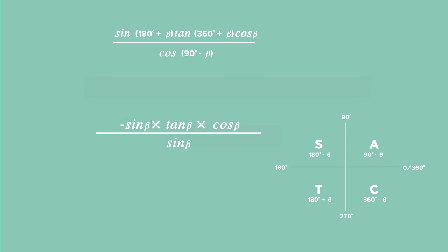So therefore to reduce sine of 180 plus beta our answer is going to be negative sine beta times by tan of 360 plus beta. Now for 360 plus beta remember that you can go around and around your Cartesian plane in what we call a revolution. So therefore 360 plus beta is going to take you back into the first quadrant.